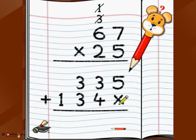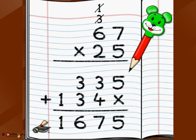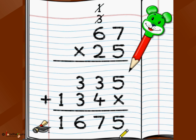Now we draw a line and do the addition. 5 + 0 is 5, 4 + 3 is 7, 3 + 3 is 6, and 1 + 0 is 1. So the answer of 67 × 25 is 1675.